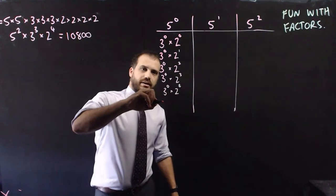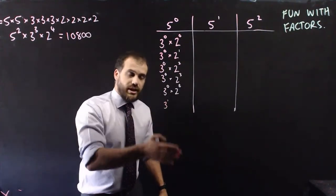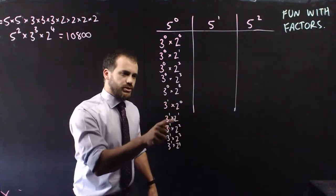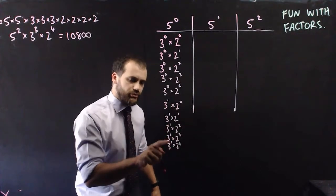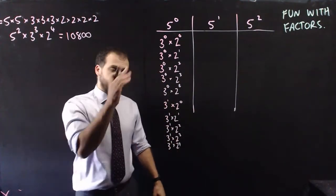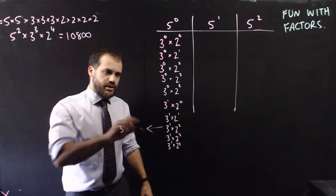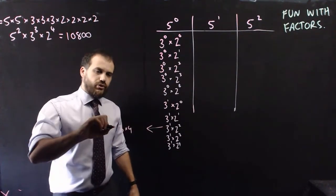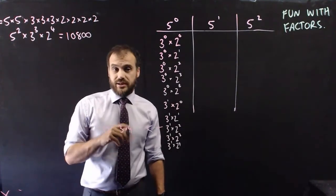Now I can move on and do 3 to the 1, and move down the list as well. So I have 3 to the 1 times 2 to the 0, 3 to the 1 times 2 to the 1, 3 to the 1 times 2 to the 2, 3 to the 1 times 2 to the 3, and 3 to the 1 times 2 to the 4. All of those are factors as well. Let's just pick one at random — 3 to the 1 is just 3, and 2 to the 2 is 4, so 3 times 4 is 12. I know that 12 is a factor of 10,800.